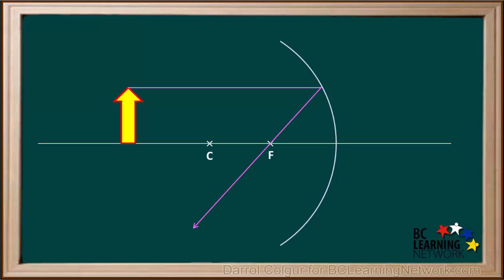Next, we draw a line from the top of the object, right through the center of curvature C, and strike the surface of the mirror. Because this ray is going through the center of curvature, it will bounce straight back on the same path.